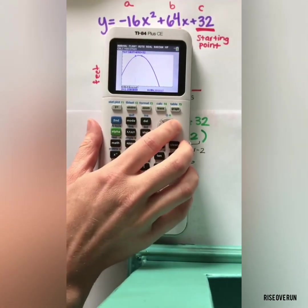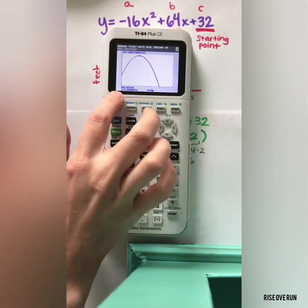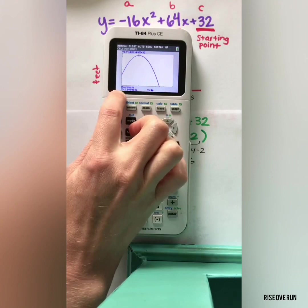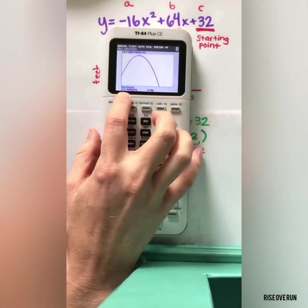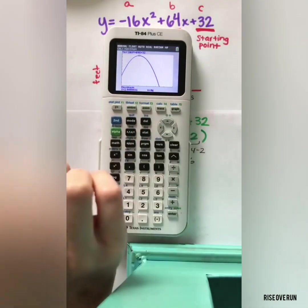We need to scoot to the left and hit enter, scoot to the right and hit enter, and then say yes to guess. Here we see the maximum is at 2, 96. Now your calculator may have some tiny decimal, but it's 2.